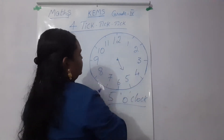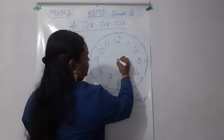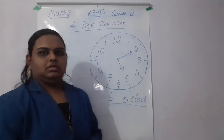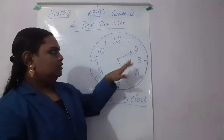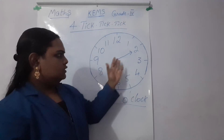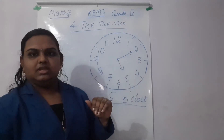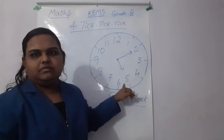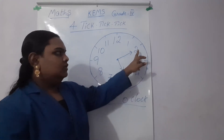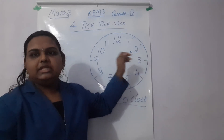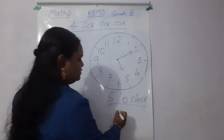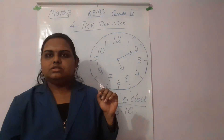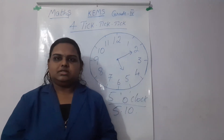Now I am moving the long hand to 2. The 2 represents the minutes, so 2 is minutes and 5 is the hour — because the short hand represents the hour. So the time is 5 hours 10 minutes, that is 5:10.